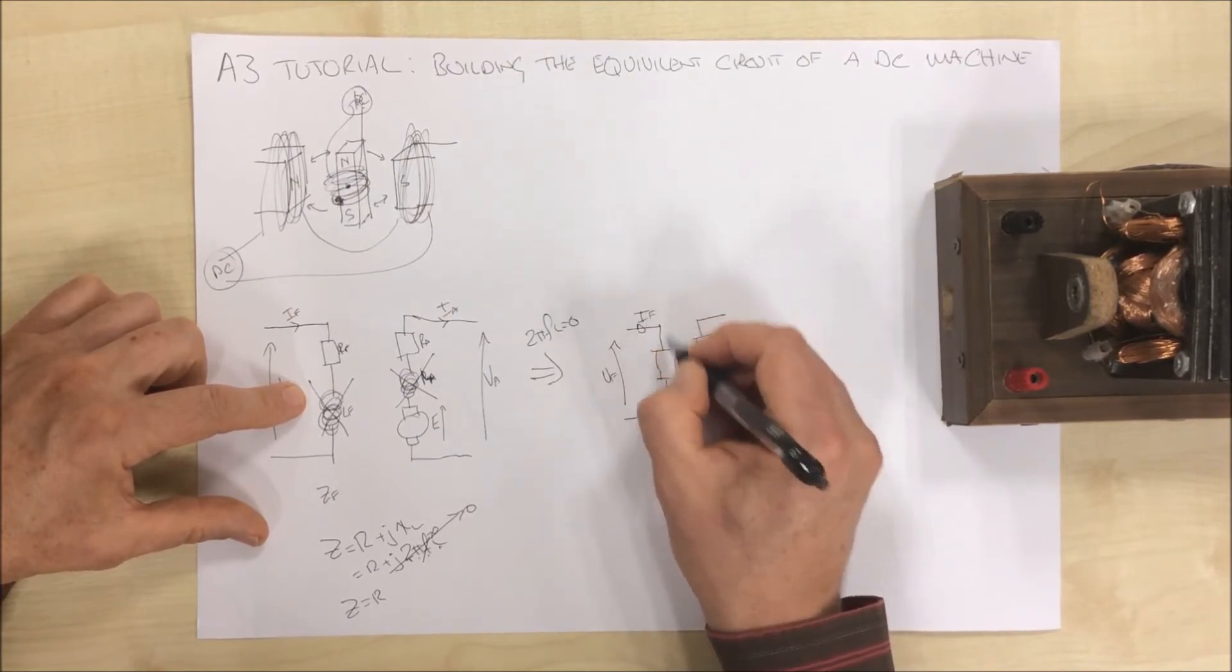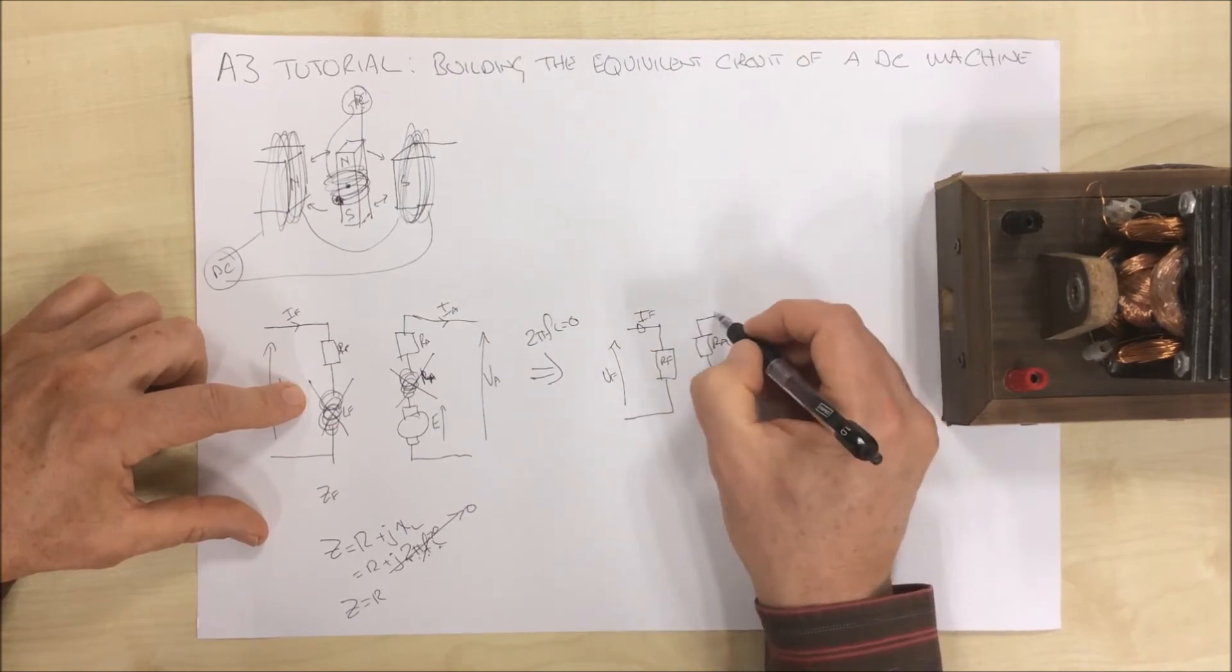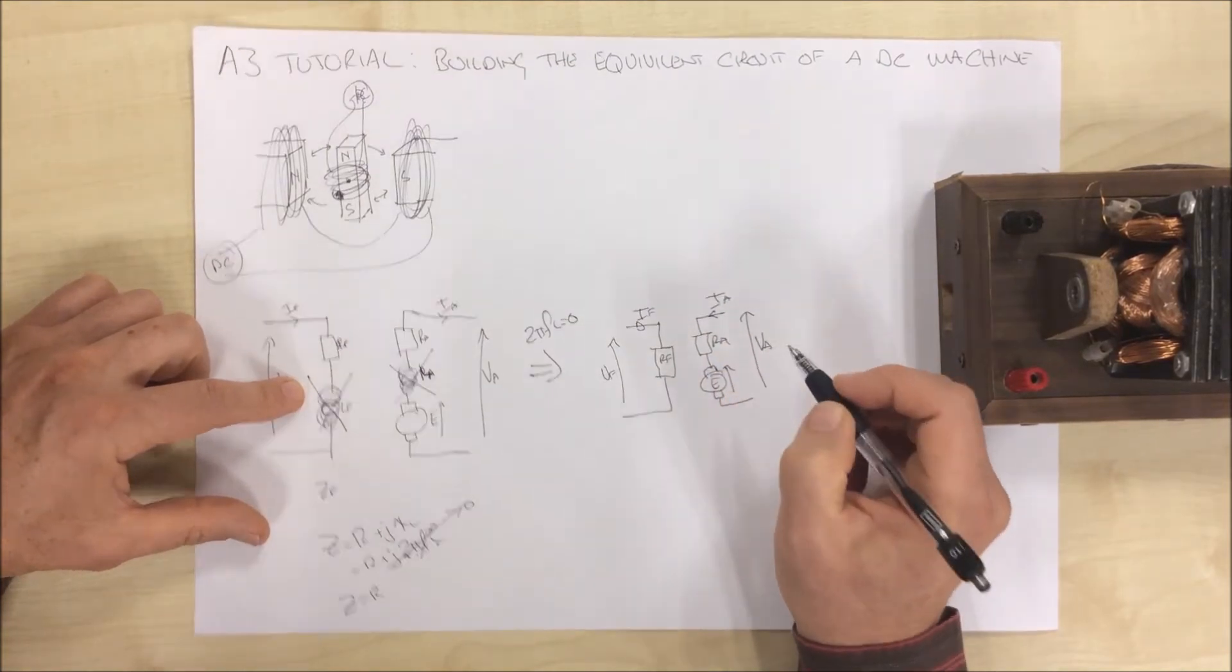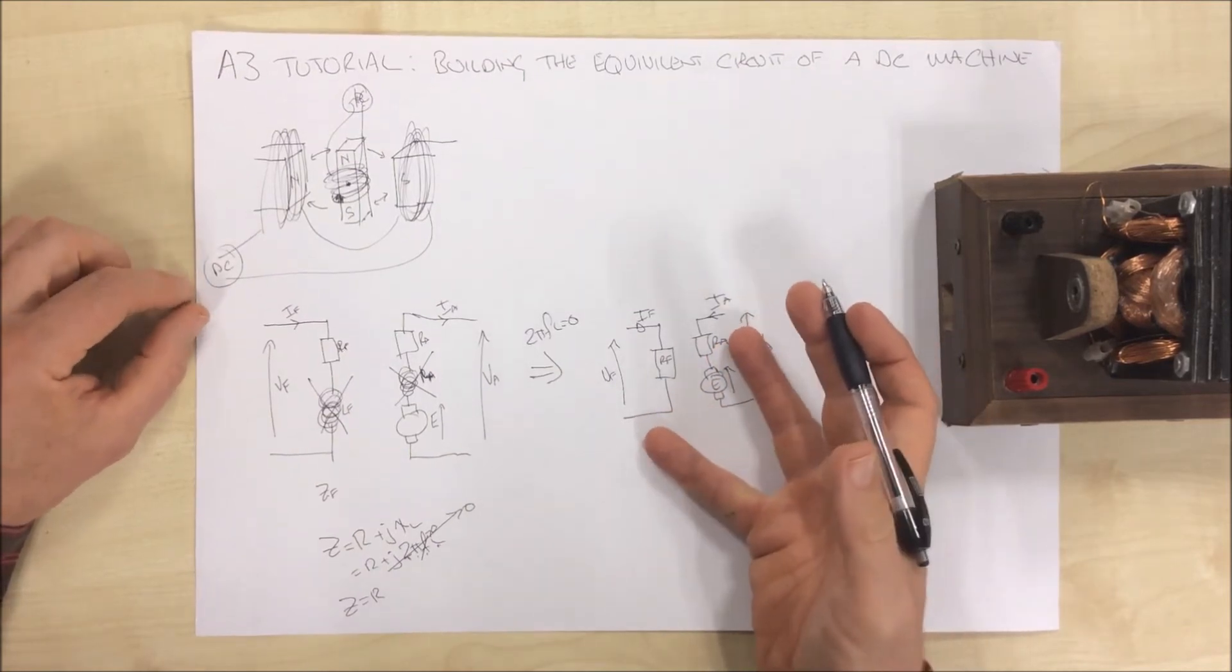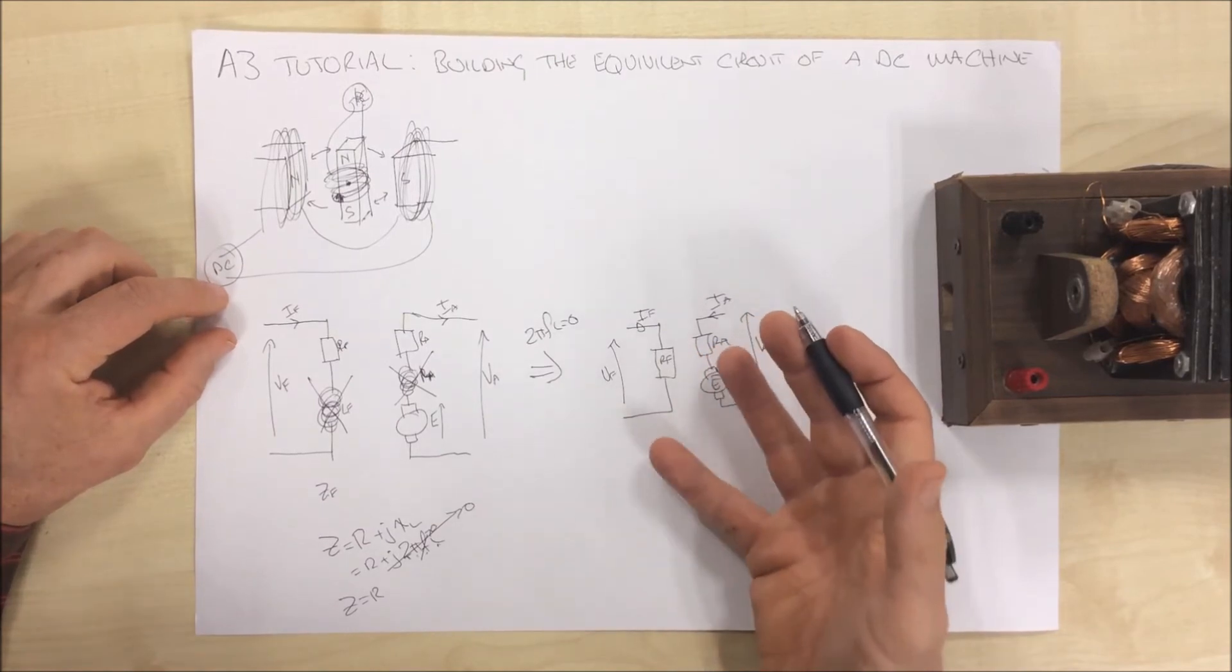Field voltage, field current, field resistance, armature resistance, armature current, armature voltage. That is all that is needed to know to understand how a DC machine works.